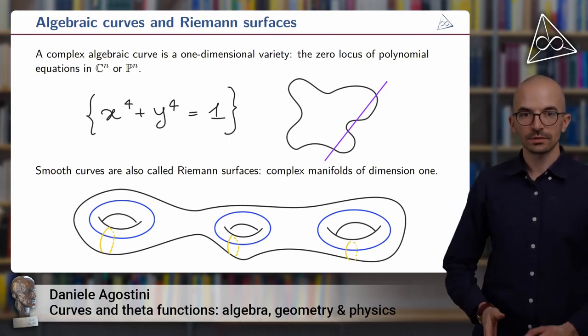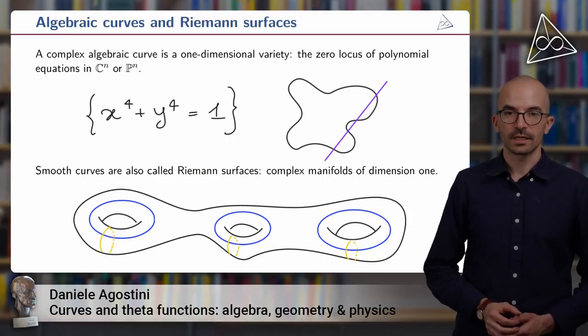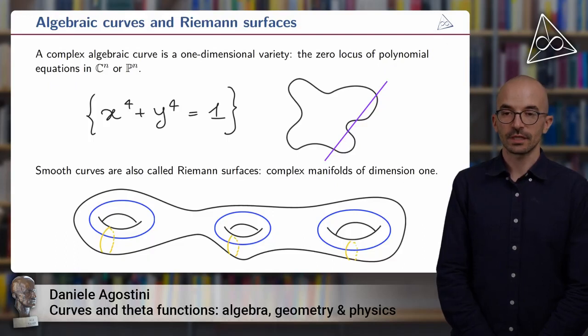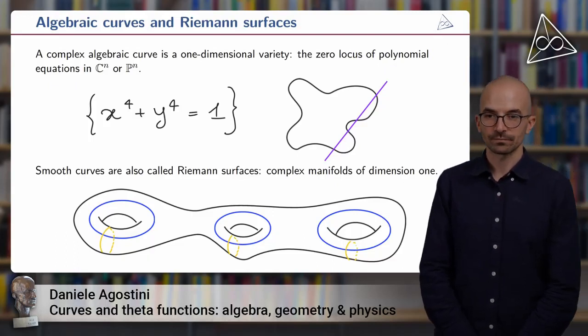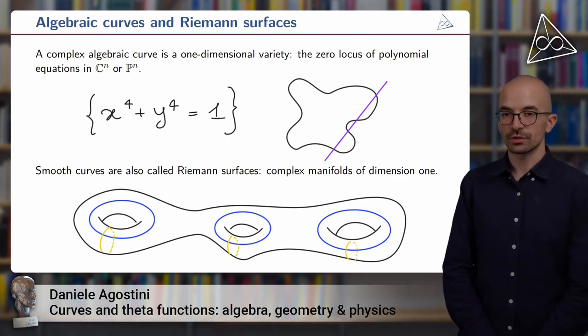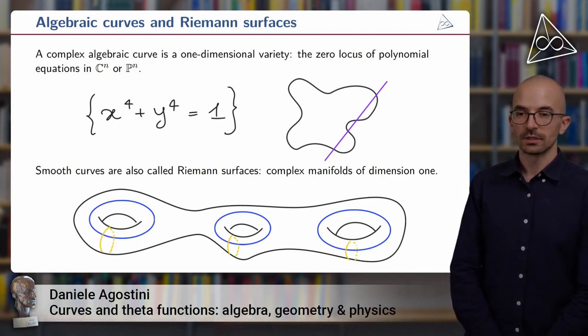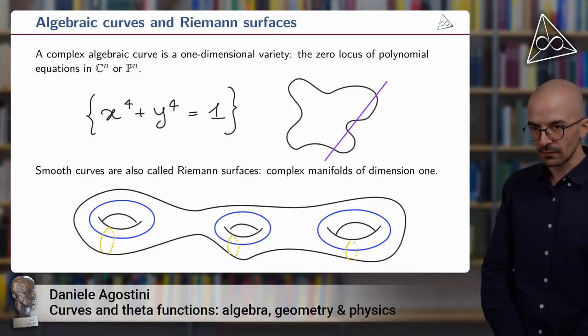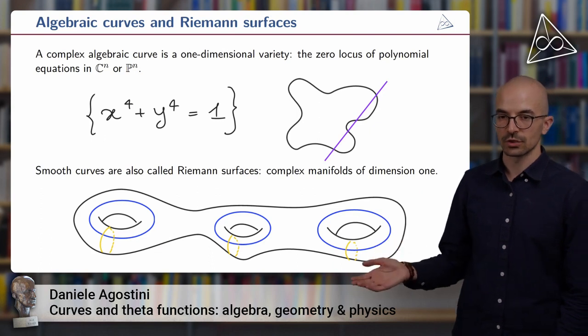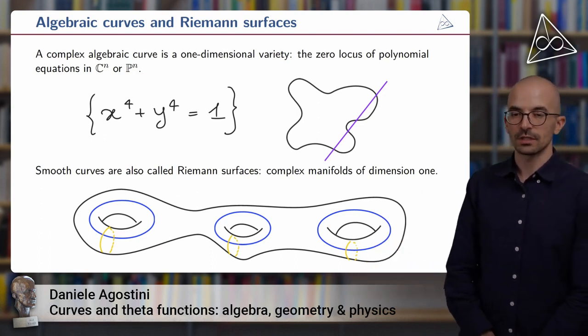When curves are smooth, such as our example here, then they are also called Riemann surfaces. So this means that they are compact complex manifolds of dimension one. Any such compact complex manifold is topologically a torus with g holes, and g is called the genus of the Riemann surface and its most important invariant. For example, in the case of our quartic here, the torus has genus three. You can see a cartoon of it down here.